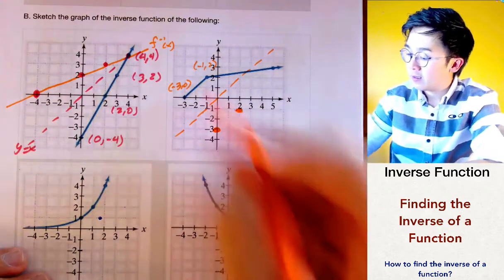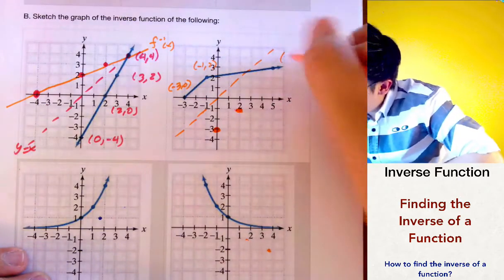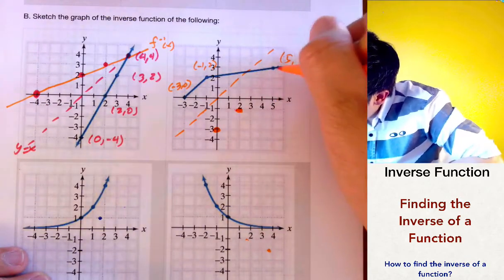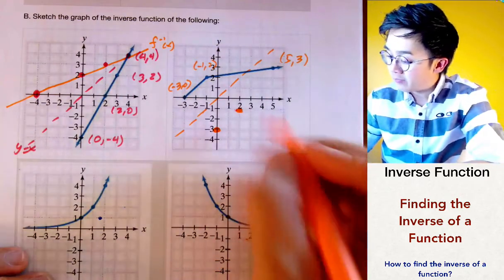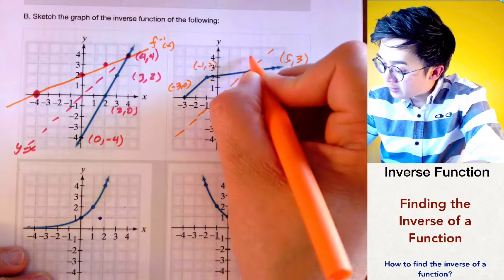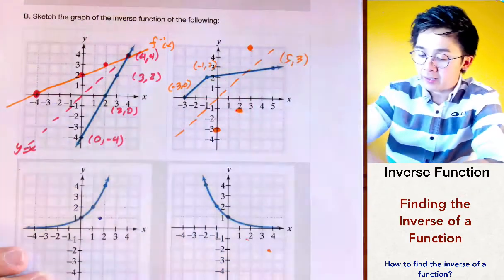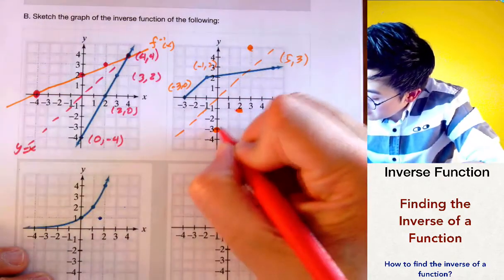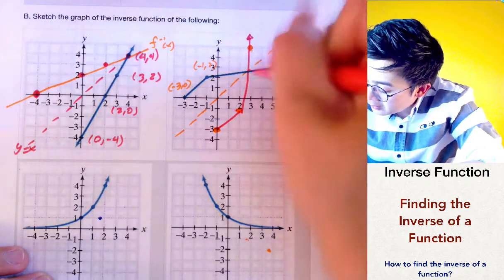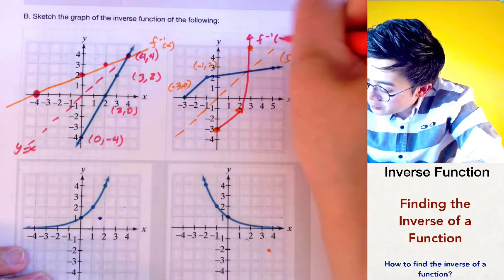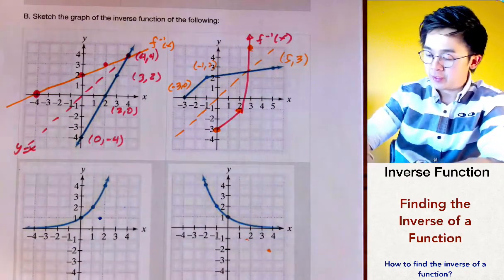The next point is at (5, 3), so its inverse is (3, 5) — x is 3 and y is 5. Plotting this point and connecting the dots, we are now able to produce our f⁻¹(x) for the second function.